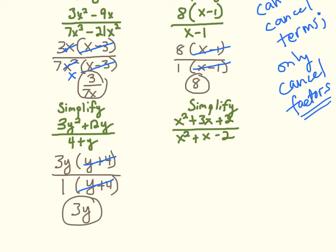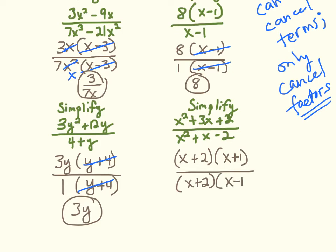In the next one, I have two trinomials — I need to factor both. Since the lead coefficient is 1, I need factors of 2 that sum to 3, which is 2 and 1, so the numerator is (x plus 2)(x plus 1). For the denominator, factors of negative 2 that sum to positive 1 give (x plus 2)(x minus 1). I cancel the common factor of (x plus 2), and what remains is x plus 1 over x minus 1.